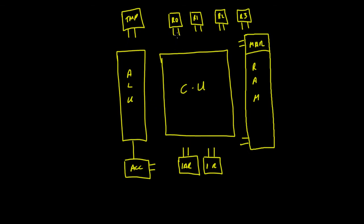The set allows us to write to the memory, and the enable allows us to read from it. So we can write into a register by setting it high, and we can read out of it by setting the enable high. All of these sets and enables have to be controlled somewhere, and they are controlled in the control unit. The control unit connects all of these sets and enables, and determines when one is set and when one is enabled.